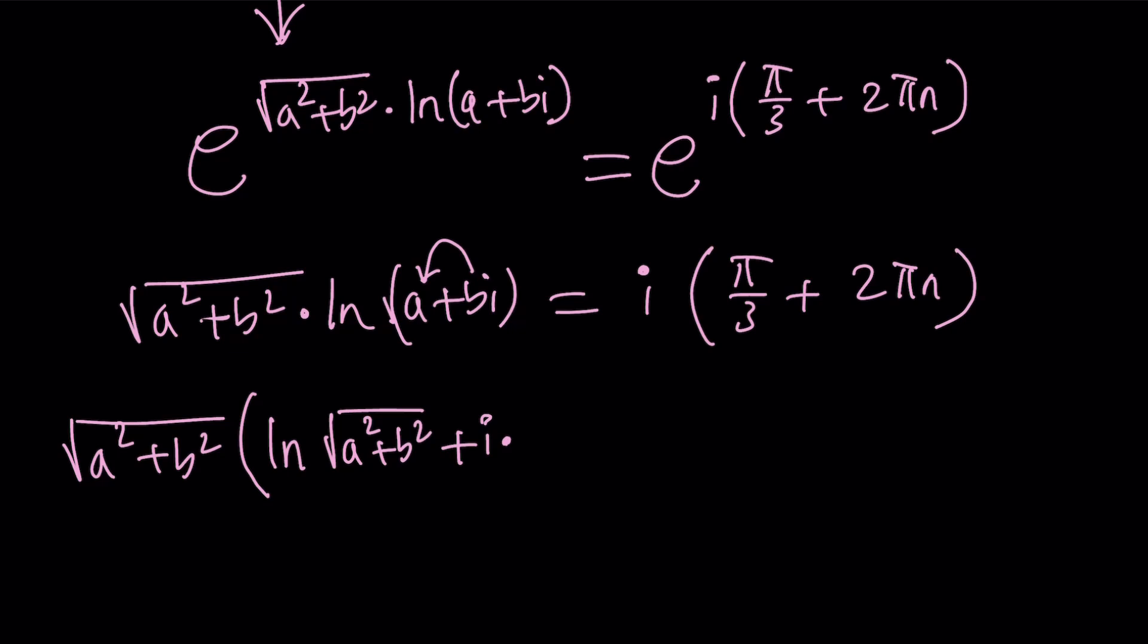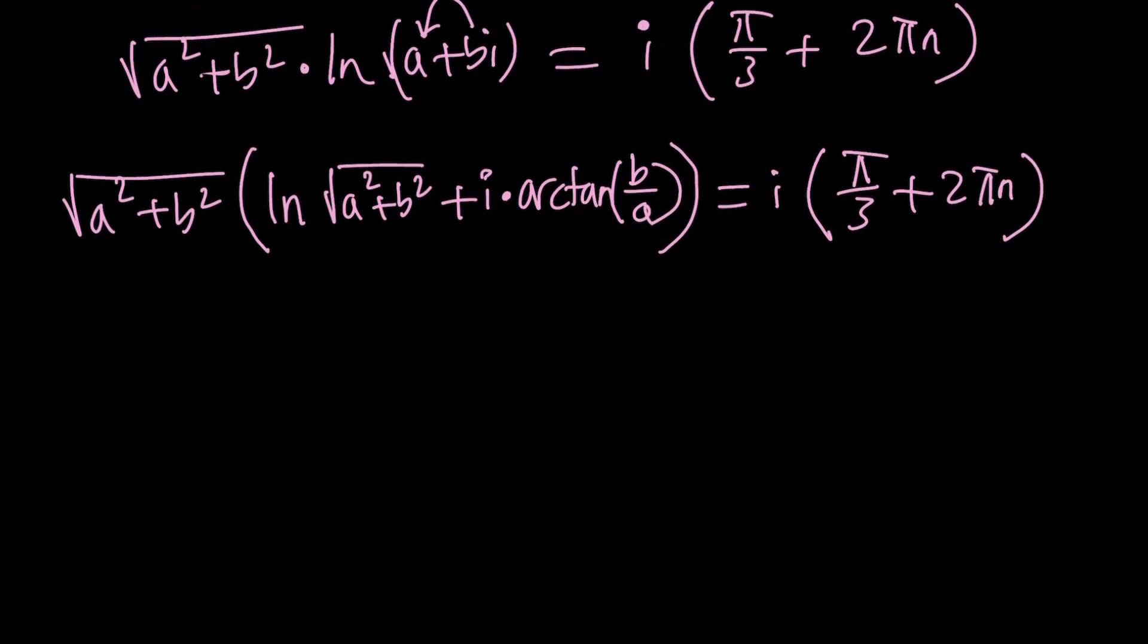Theta is b over a, so we can use arc tangent. Let's just assume that a plus bi is in the first quadrant, so we can use arc tangent directly. Otherwise, you have to adjust for the quadrant. If you want to get the principal value, you can also set n equals zero, and let's distribute.